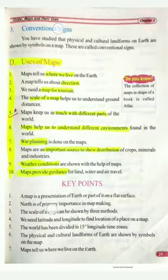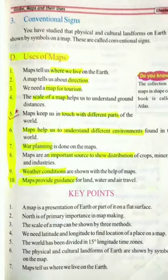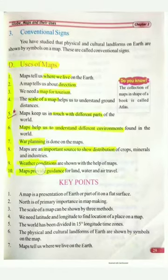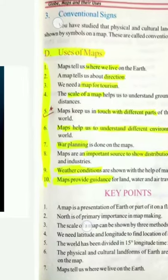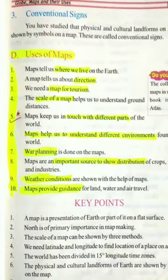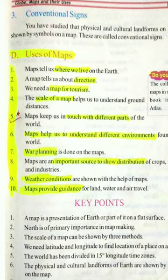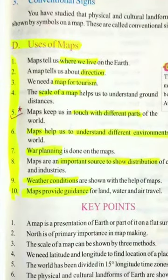Here we will write 'uses of maps.' Uses of map is also called the advantages of map. That is, the uses of maps — if they are useful, they will automatically give you some benefit, so those are your advantages. On page number 29, you can see there are 10 points written, but you have to memorize 5 for today. Today's work will be 5 points, and the next 5 we will read in tomorrow's lecture. So today's first lecture covers only 5 uses of maps.